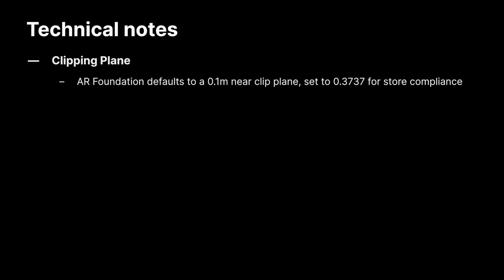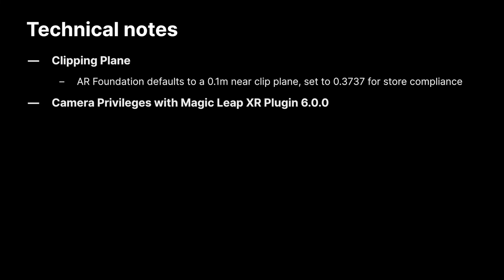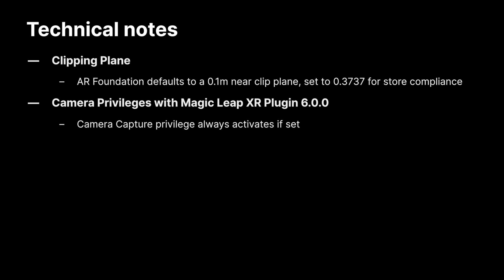Camera Privileges with Magic Leap XR Plugin 6.0.0: For image tracking to work in AR Foundation, Magic Leap XR Plugin needs to be set to version 6.0.0, not the default version 5.1.2. However, this version of the plugin also automatically turns on the camera for the duration of the experience when the camera capture privilege is set. Some experiences may want to only use the camera when needed and turn it on or off during the experience. If that's what your app wishes to do, you will need to use version 5.1.2 and integrate the Magic Leap Unity package using the Magic Leap SDK version of image tracking.